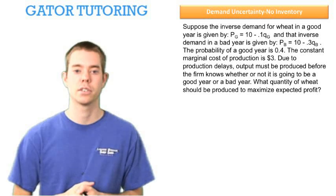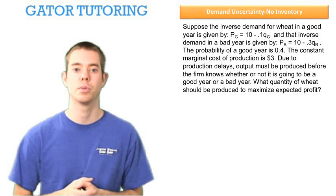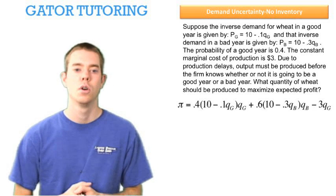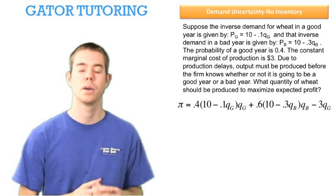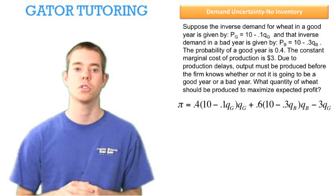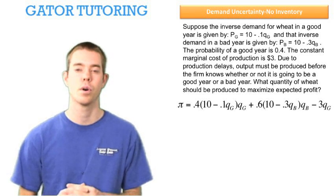The question's asking, what quantity of wheat should be produced to maximize expected profit? So first let's write our expected profit line, which says the 40% that we think there's going to be a good year, multiplied by the good year information, which is the price in a good year times the quantity in a good year.